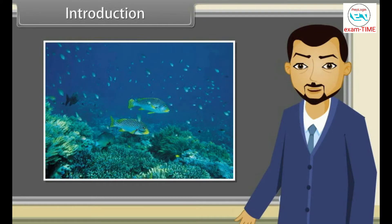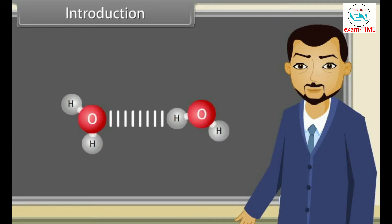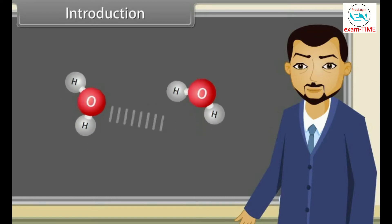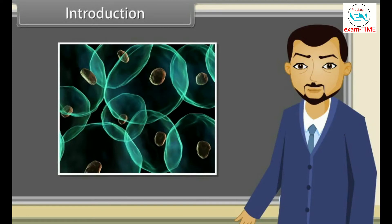Life depends upon hydrogen bonding. Life is created from water, and water is a liquid due to hydrogen bonding in its molecules. If there is no hydrogen bonding, then water would be a gas just like air. There would be no oceans, no lakes and no rivers. The fluids in cells of living bodies also exist due to hydrogen bonding, so all the living systems depend upon hydrogen bonding.